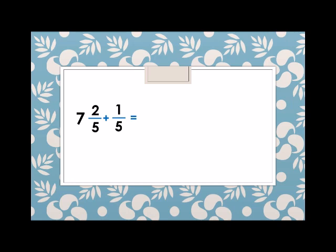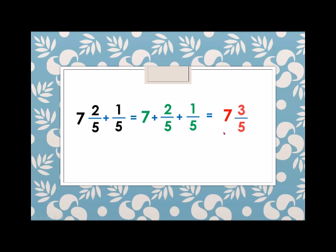Next we have seven and two fifths plus one fifth. We rewrite this as seven plus two fifths plus one fifth. We have one whole number, so we just write seven. Since we have like terms — the same denominator — we simply add the numerators: two plus one equals three over five. So seven and two fifths plus one fifth equals seven and three fifths.